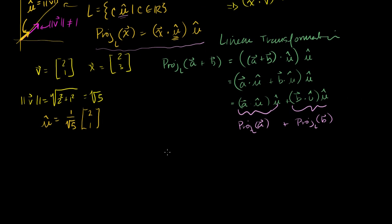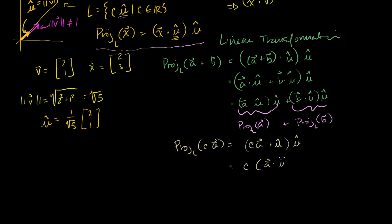Our second condition is that the projection of a scalar multiple should equal a scalar multiple of the projection. The projection onto L of scalar c times vector a equals c·a dot u, times u. Using dot product properties, this equals c times (a dot u), times u, which equals c times the projection of a onto L. So we've met both conditions for a linear transformation. Our projection onto a line L in Rn is a linear transformation, which means we can represent it as a matrix transformation.